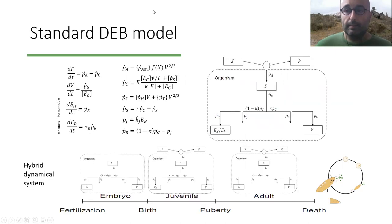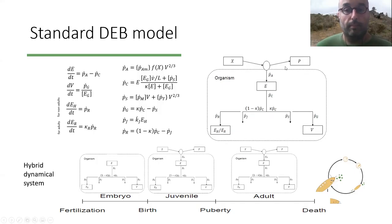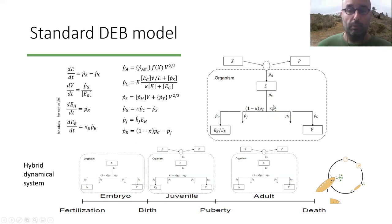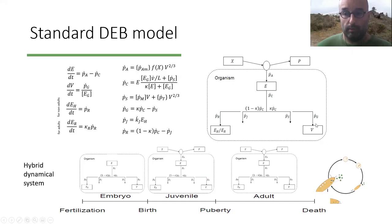This is just a slide to give you a summary of the standard DEB model. Here you have the scheme of the DEB model, where food is being transformed into reserve, and some products are produced in this transformation, mainly faeces. Then the reserve is mobilized, and we have the Kappa rule to divide this mobilized flux.